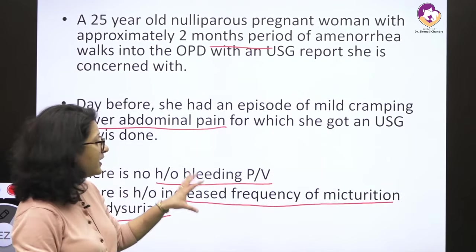For those who do not know, the crown rump length is measured in the sagittal section — the length of the embryo from the crown to the edge of the buttock. If the CRL is more than 7 mm and there is no cardiac activity, the diagnosis is early pregnancy loss. Once the diagnosis is made, the pregnancy needs to be terminated. The decision to diagnose early pregnancy loss is guarded because we do not want to unnecessarily terminate a pregnancy that could have grown.